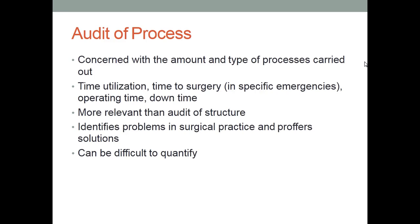Audit of the process is concerned with the amount and type of processes carried out — time utilization, time to surgery, operating time, and downtime. This means: when you first receive a patient in emergency, how much time do you take to resuscitate them, allow them to come to the operating theater, how much time you spend operating, and how much time to make the patient comfortable and shift them back to the ward. This is more relevant than audit of structure. For example, if a patient in emergency needs resuscitation and instead of 2 hours you took 4 to 6 hours, that results in poor patient outcome. Audit of process identifies problems in surgical practice and proper solutions, though it can be difficult to quantify.